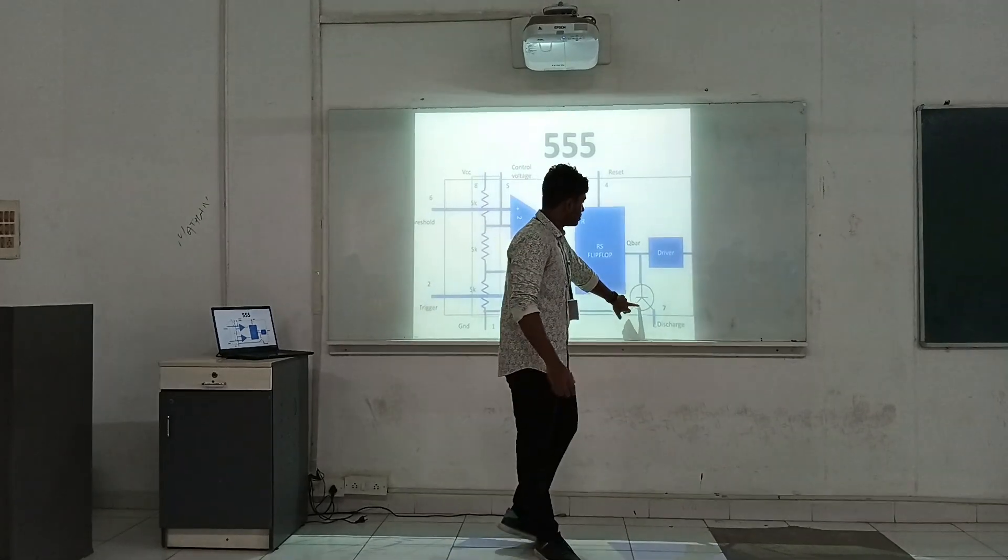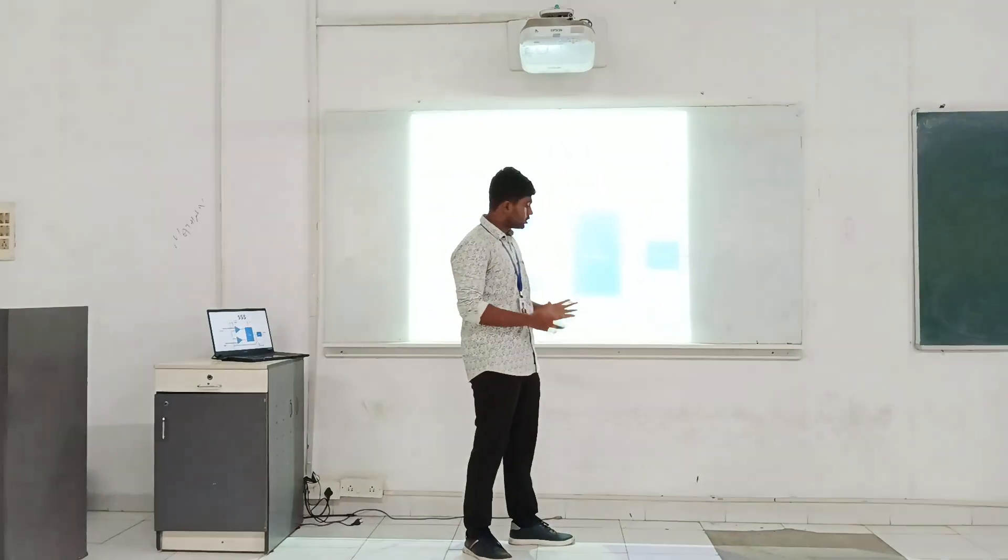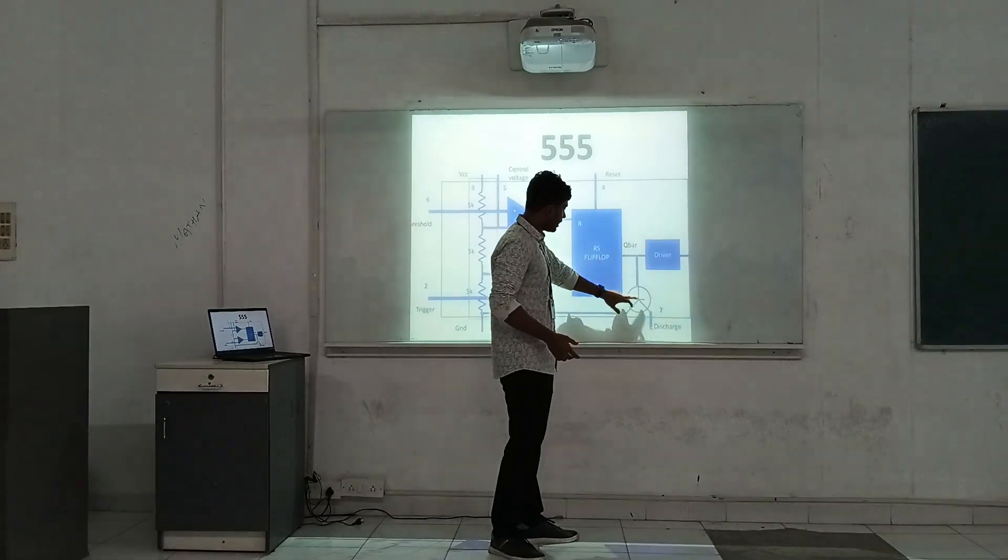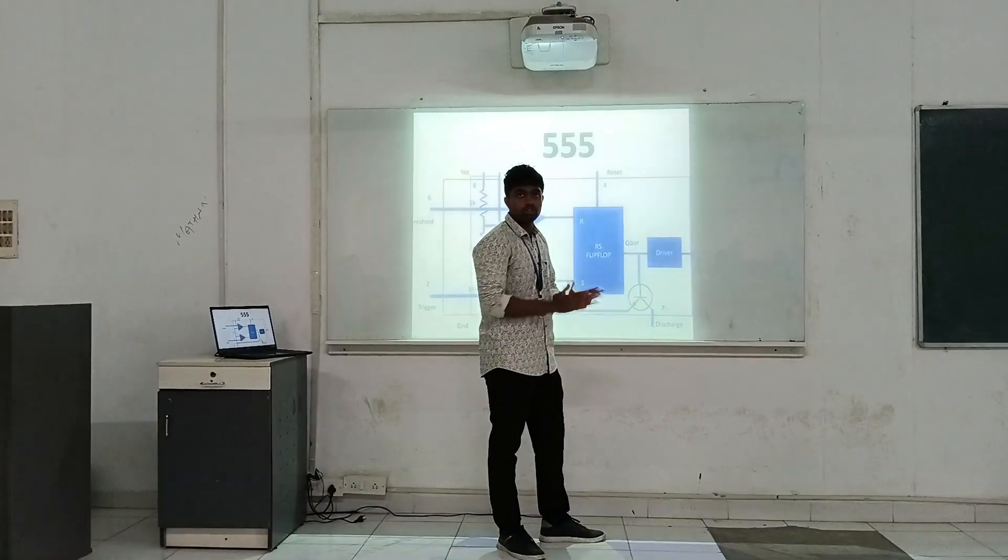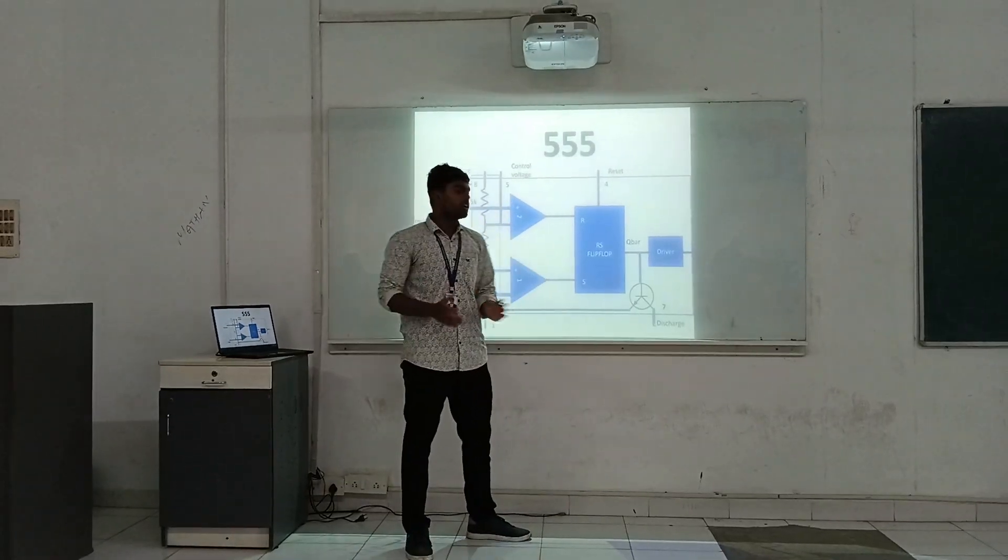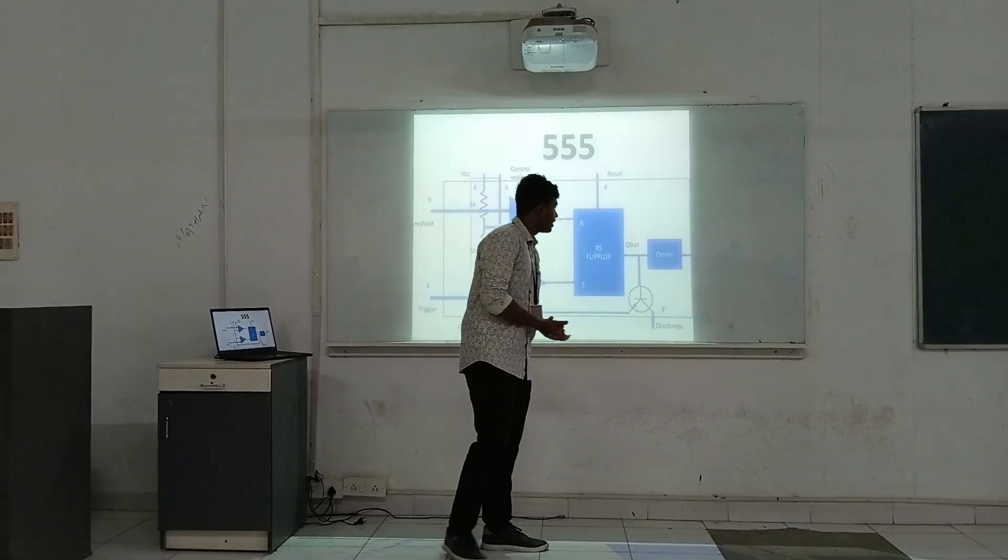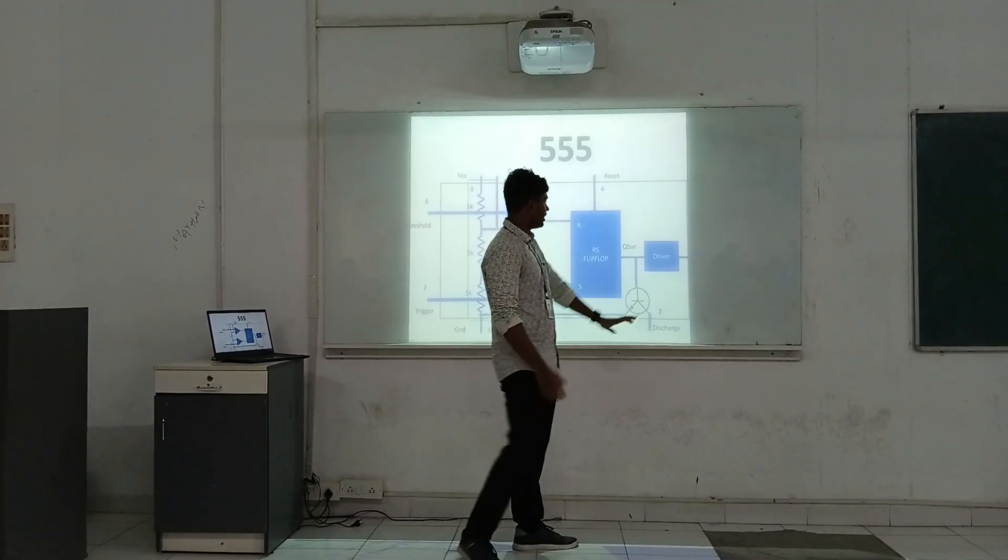Next, the NPN transistor and discharge pin. When the Q bar is high voltage, to discharge through this NPN transistor, then it is open and discharges. This is a simple principle used here.